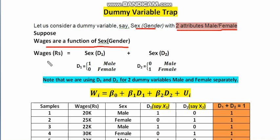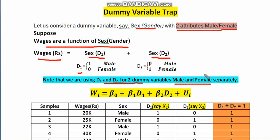If we model this, wages are a function of sex with dummy variables D1 and D2. D1 is equal to 1 for male and 0 for female, and D2 is equal to 0 for male and 1 for female. Note that we are using D1 and D2 separately to identify both attributes, even though there are only two attributes.